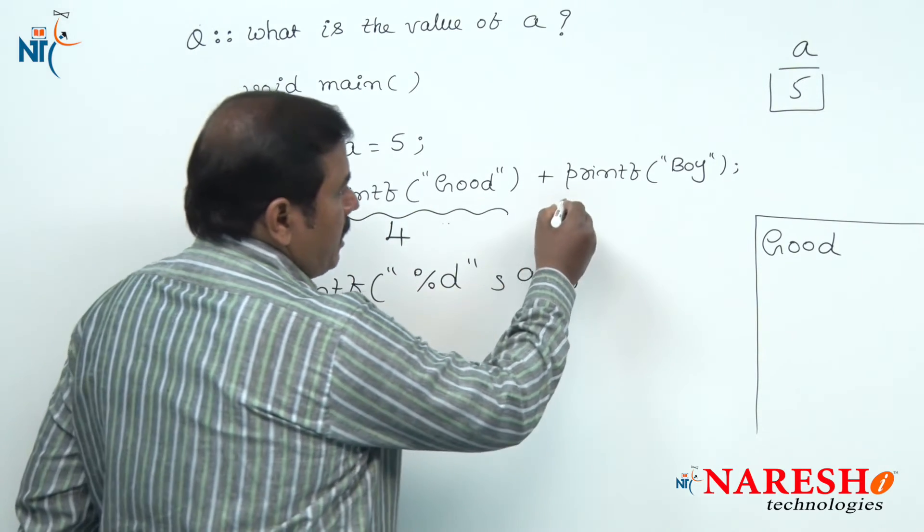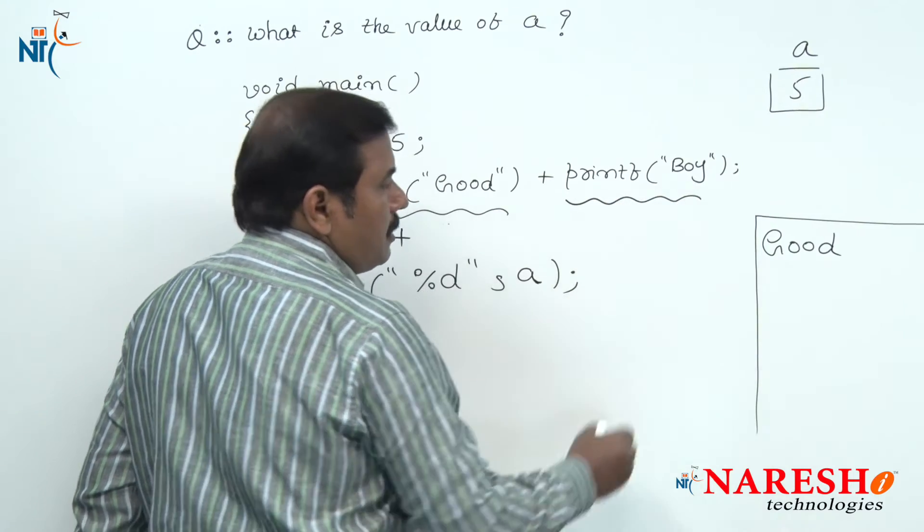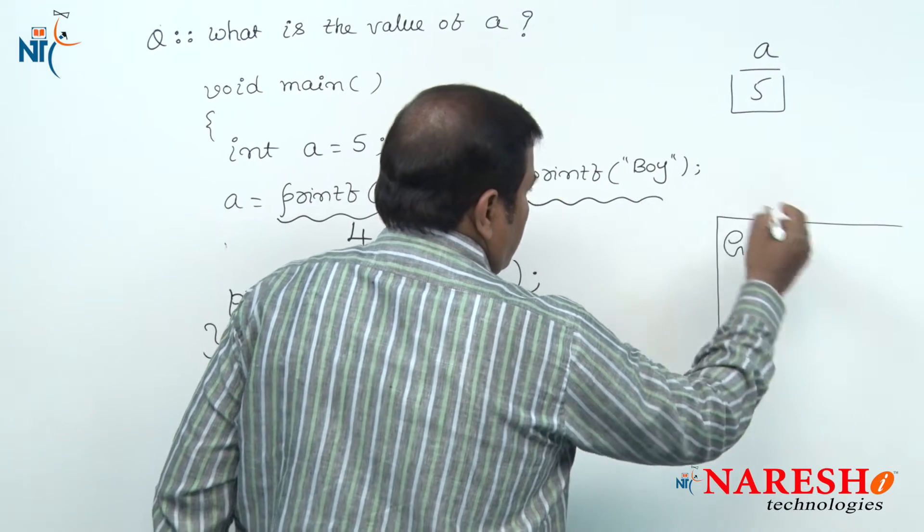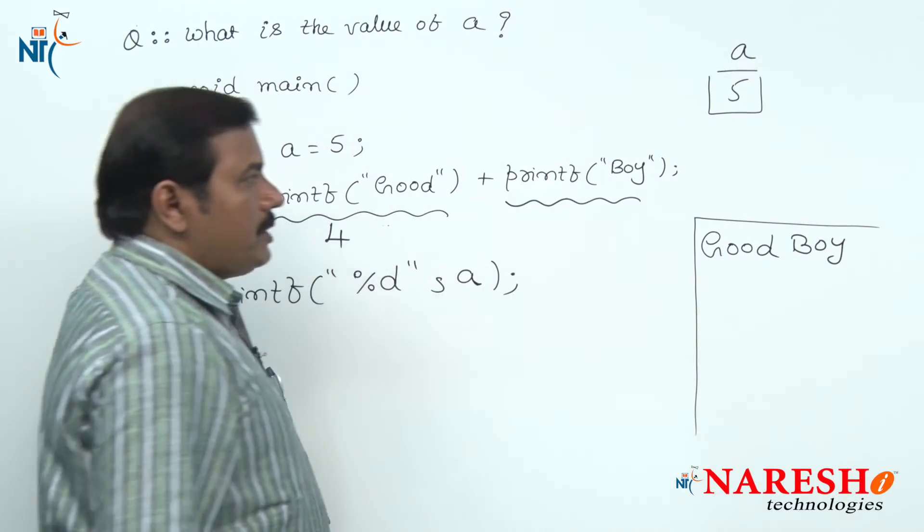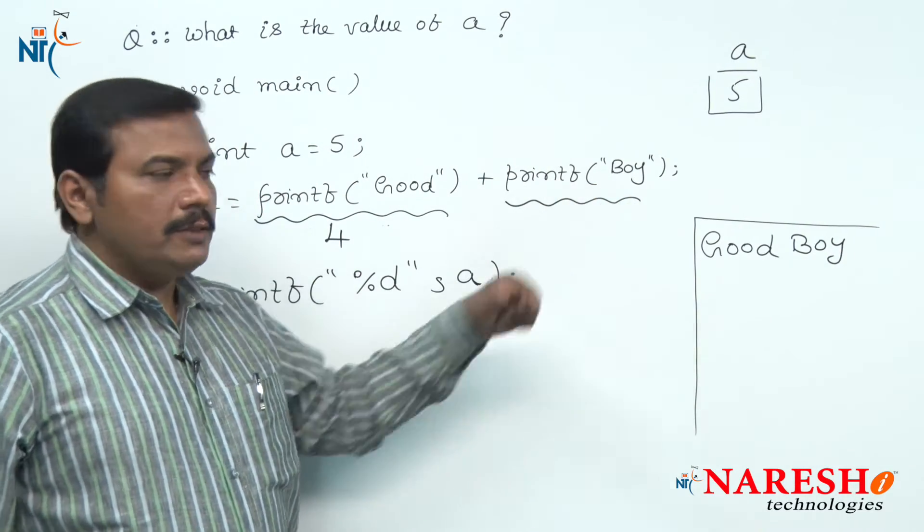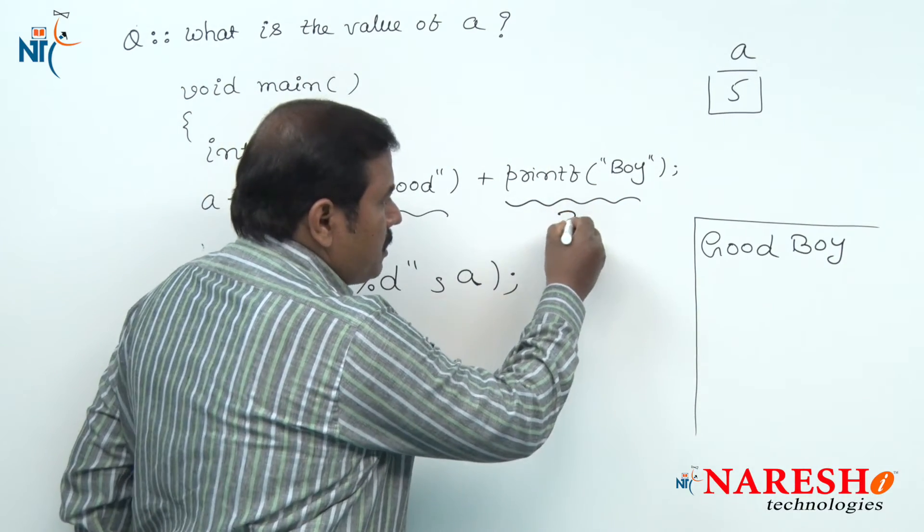The second printf statement displays the string "Bye," and this string consists of 3 characters, hence this printf returns 3.